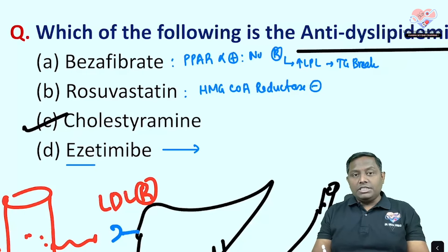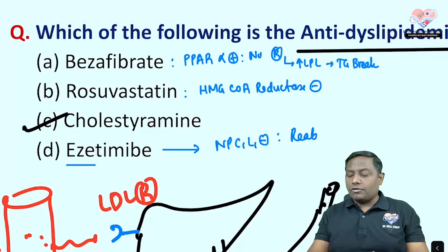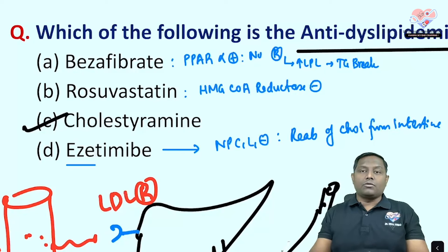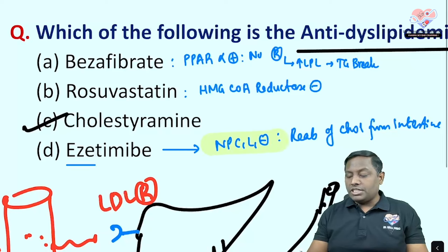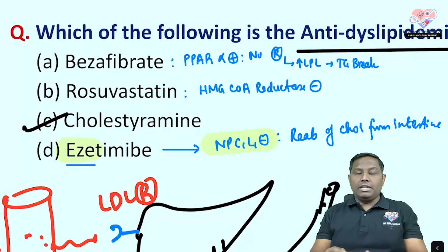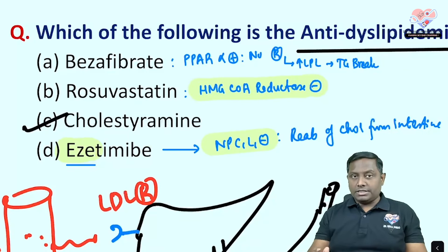Ezetimibe is a simple drug — its mechanism of action is inhibition of cholesterol absorption from the intestine. It works by inhibiting a transporter known as NPC1L1, thereby preventing intestinal cholesterol absorption.